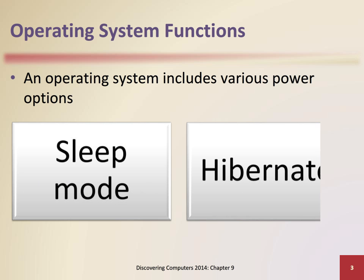An operating system includes various power options. Sleep mode saves any open documents and running programs or apps to memory, turns off all unneeded functions, and then places the computer in a low power state. Hibernate saves any open documents and running programs or apps to an internal hard drive before removing power from the computer or device.